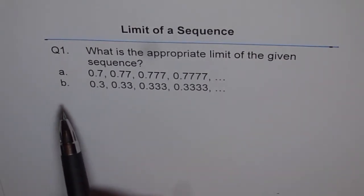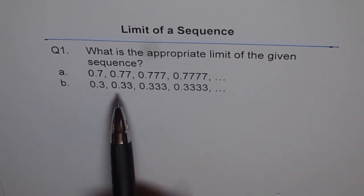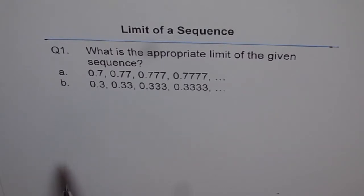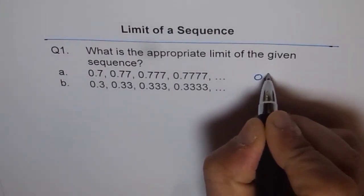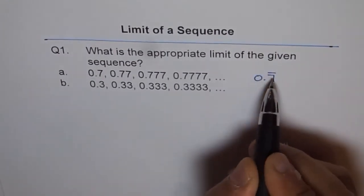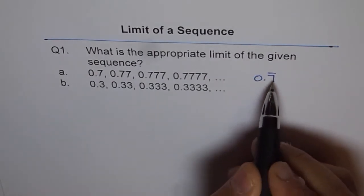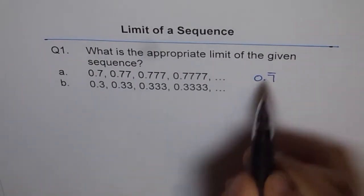Sequence a is 0.7, 0.77, 0.777, and so on. In general we can write this as 0.7 recurring. This bar on the top says that 7 repeats, 7 recurring.